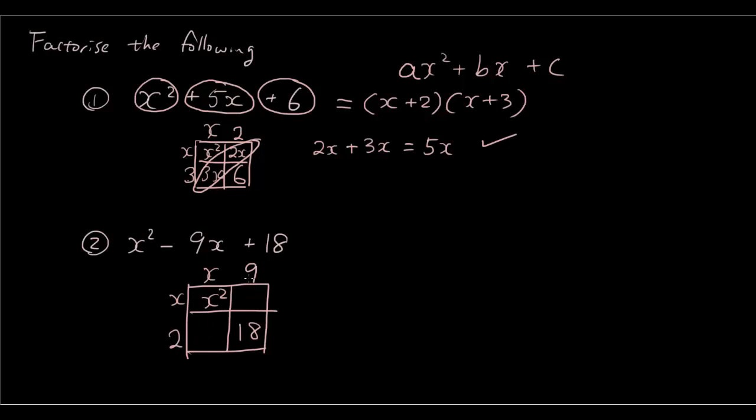And now 9 times x is 9x, 2 times x is 2x. Now let's check whether the diagonal adds together to the term in the middle of the expression. So 9x plus 2x equals 11x. Now does 11x equal the term in the middle? No it doesn't.